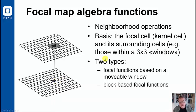Focal map algebra functions may be divided into two types. We have focal functions based on a movable window, so this three by three window goes through the entire raster and assesses all pixel positions with their neighbors. Or we can have block based focal functions.